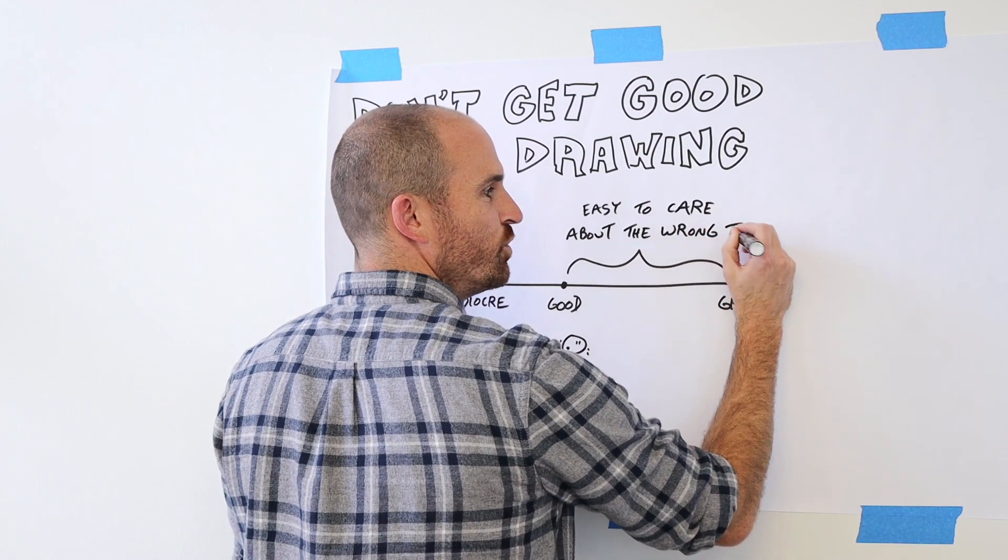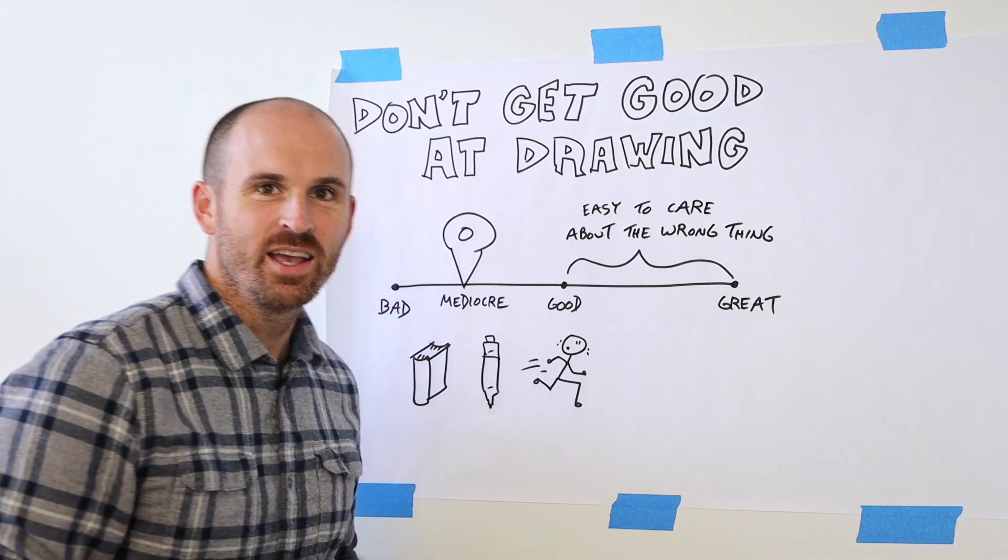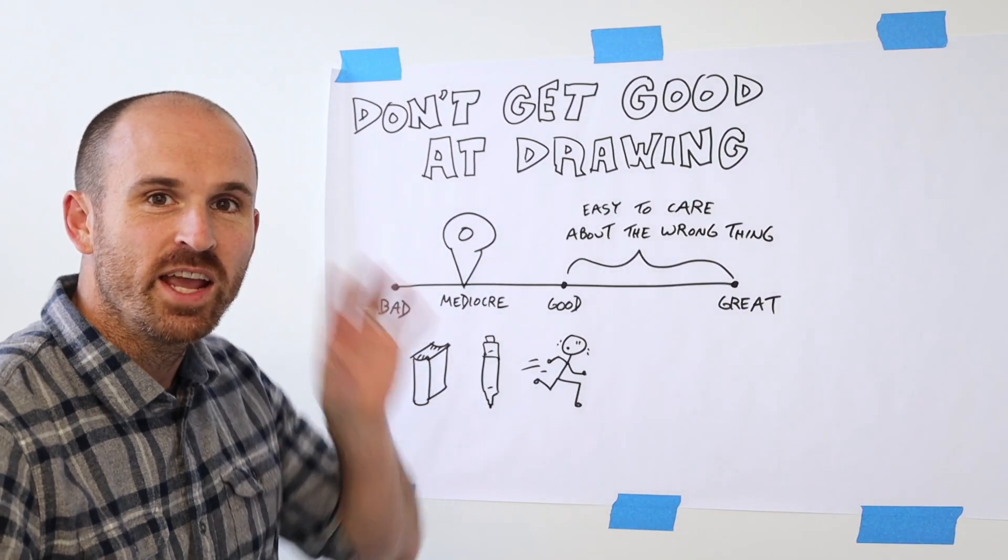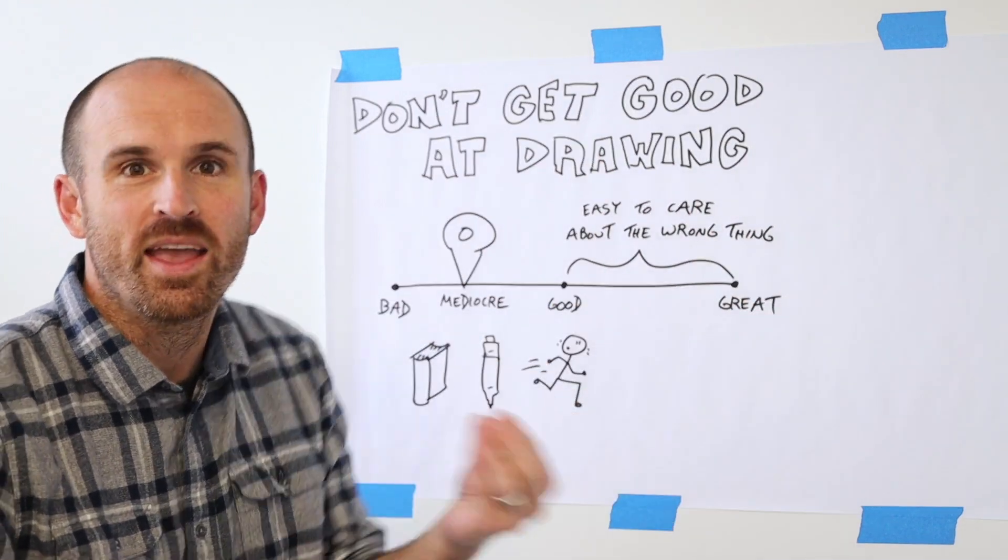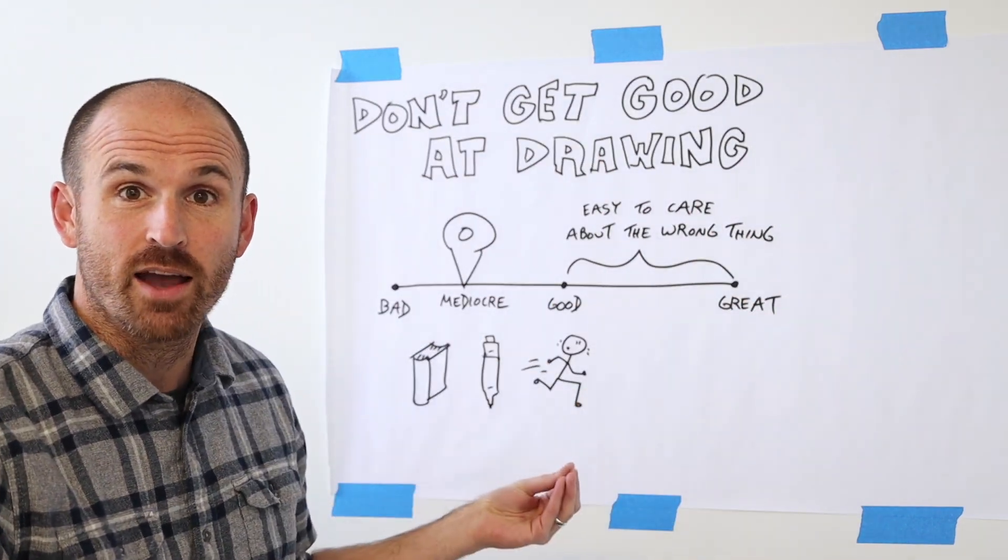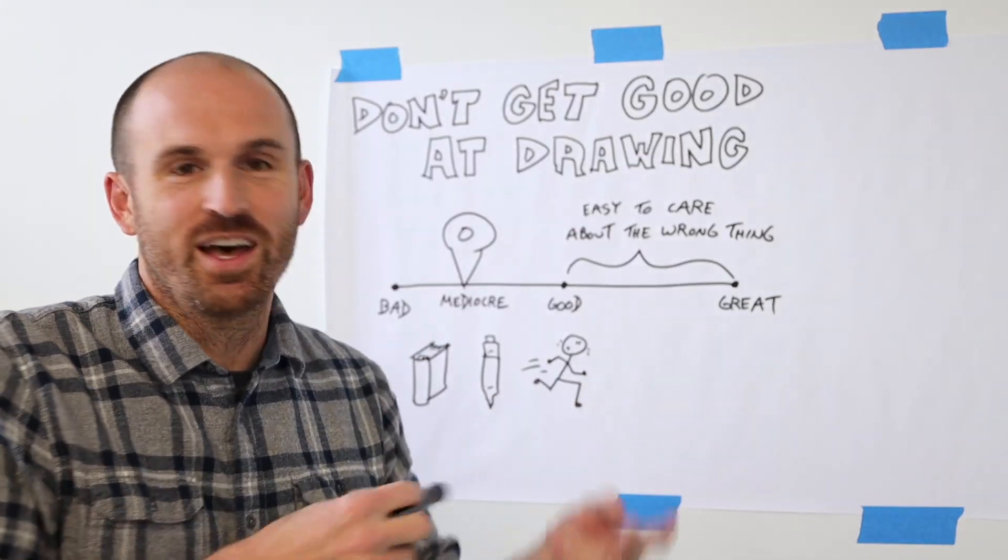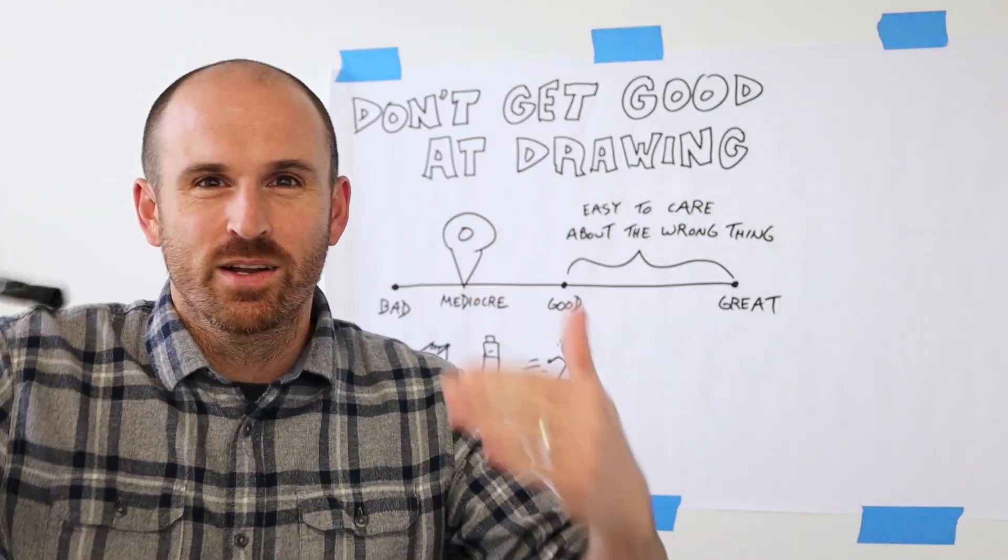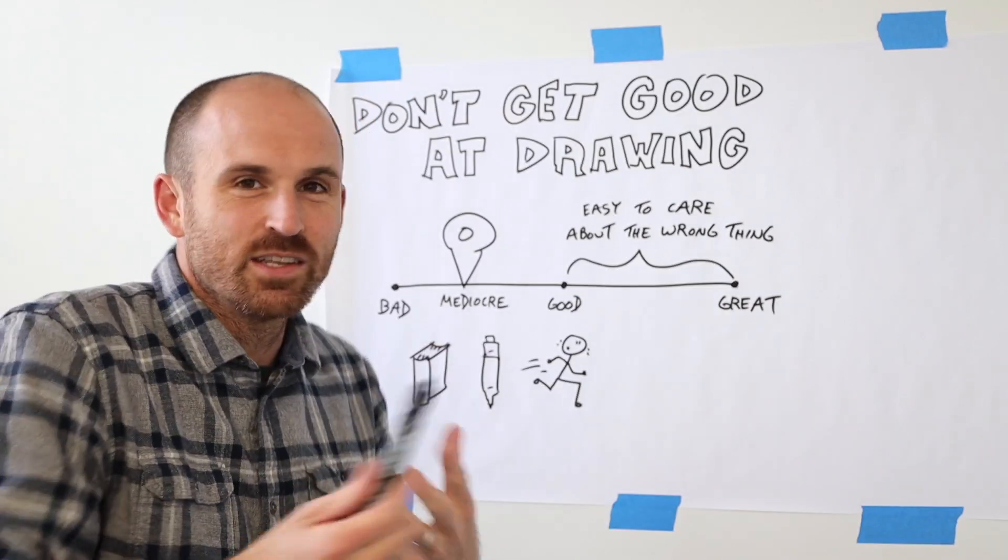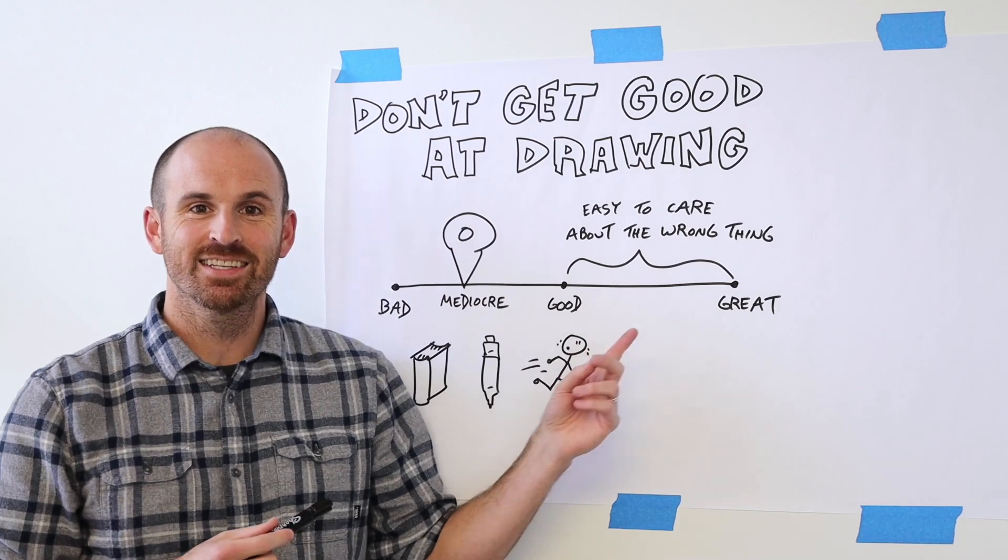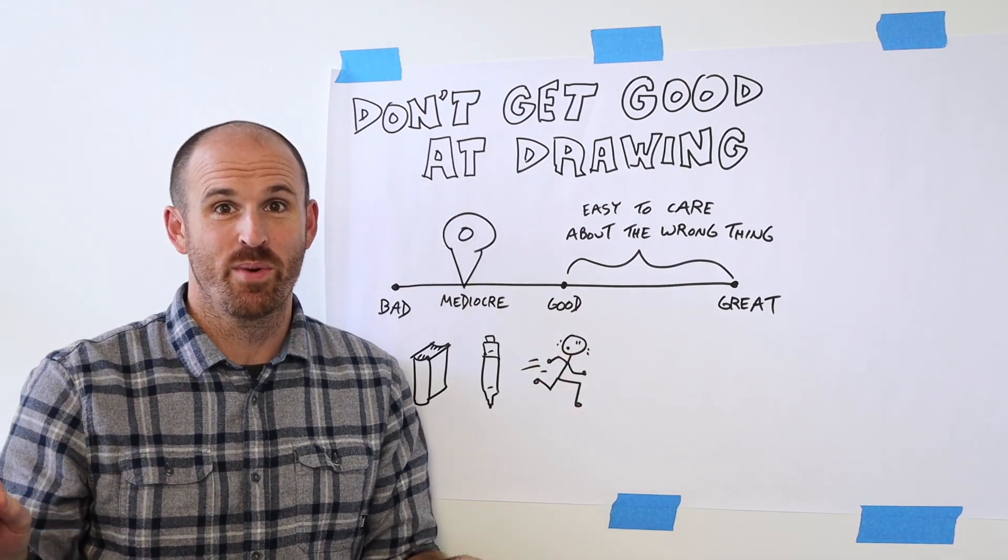When you shoot for a drawing that's great, when you care really about how the drawing looks, you're taking your mind away from the impact of what you're actually sketching out. You're not thinking about the problem that you're trying to solve, the idea that you're learning and want to remember, or the specifics of what you want to share with the person that you're chatting with. So you care about aesthetics more than you care about impact.